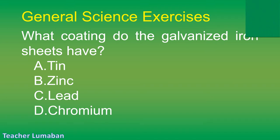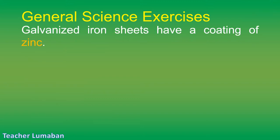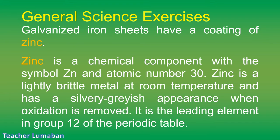The correct answer is Letter B: zinc. Galvanized iron sheets have a coating of zinc. Zinc is a chemical element with the symbol Zn and atomic number 30. Zinc is a slightly brittle metal at room temperature with a silvery-grayish appearance when oxidation is removed. It is the leading element in group 12 of the periodic table.